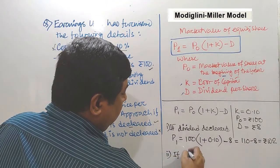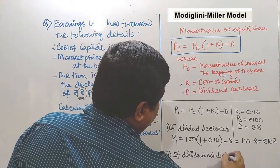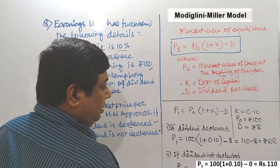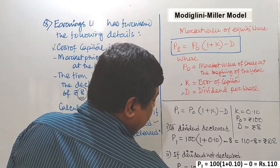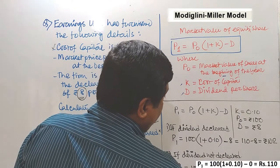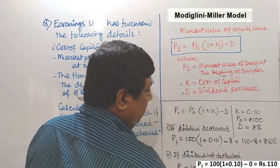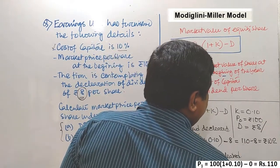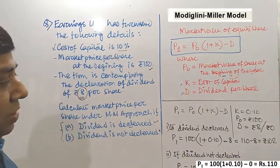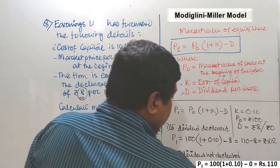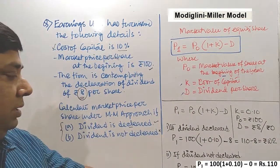Option two — if dividend is not declared: P1 equals 100 multiplied by (1 plus 0.10), minus 0. Since dividend is zero in this case, we get 100 × 1.10, which gives us Rs.110.